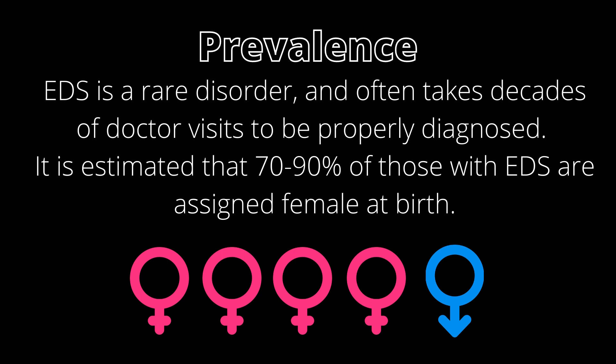By the time patients are diagnosed, they often have experienced traumas such as injuries, pregnancy, or infections that worsen their condition. It is estimated that 70–90% of those with EDS are assigned female at birth. There are thoughts that this is related to lower levels of testosterone, as this hormone is vital to muscle strength. When people have more muscle, it compensates for weak collagen-rich parts like bones, tendons, and ligaments.